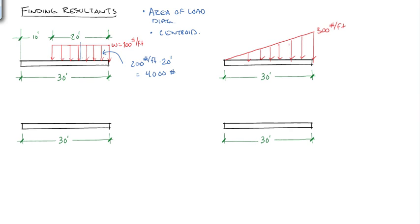That's about right there, which would be 10 feet from the right end, or 20 feet from the left end. So we would represent this as a single point load of 4,000 pounds, 20 feet from this end and 10 feet from this end.